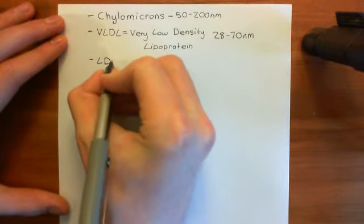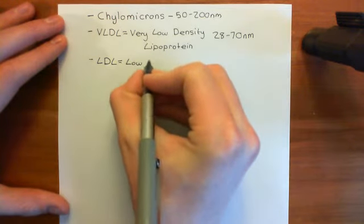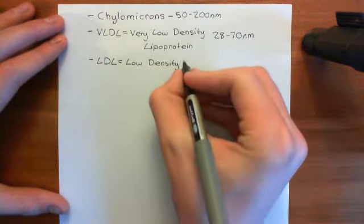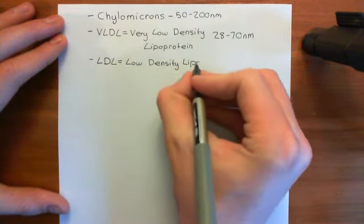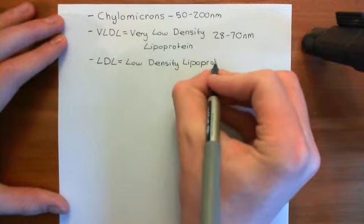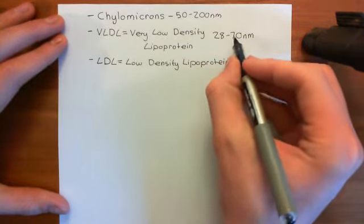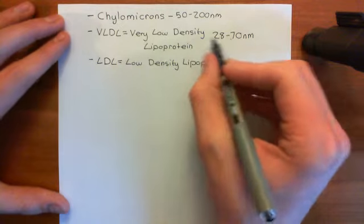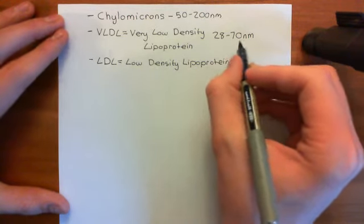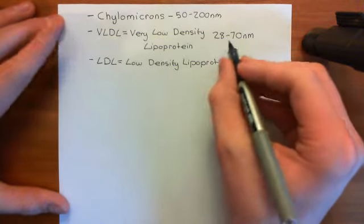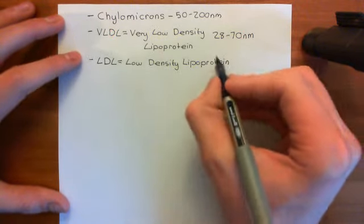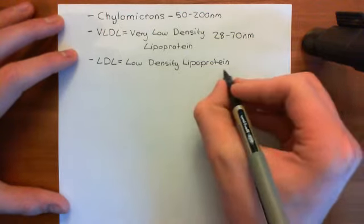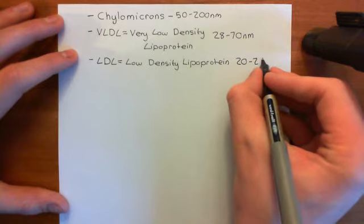Next up we have LDL — low density lipoprotein. When we come to view the physiology, we'll see the connection between VLDL and LDL. Basically, LDL is essentially what the VLDLs become once they have given away all of their triacylglycerols. So LDL should be smaller than VLDL, with a diameter of between 20 and 25 nanometres.